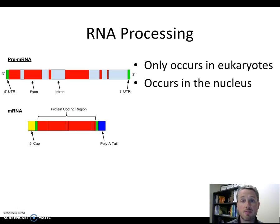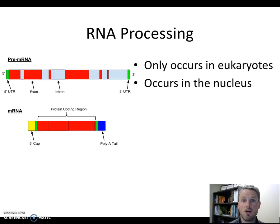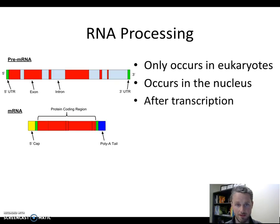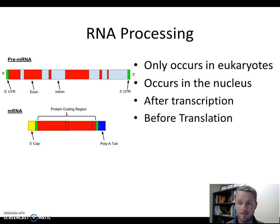This process occurs in the nucleus, right after or during transcription, since transcription also takes place in the nucleus. RNA processing happens after transcription — or arguably at the same time — and it must be completed before translation, before the RNA leaves the nucleus and moves into the cytoplasm where the ribosomes are.